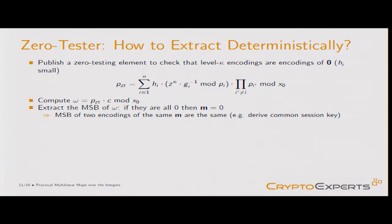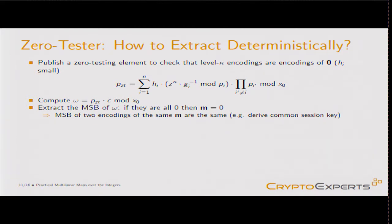How do we extract deterministic information? We publish a zero-testing element which contains z^kappa, so that you can cancel the z^kappa in level-kappa encodings. You have a level-kappa encoding, you want to derive deterministic information, so you multiply by this element mod x0 and extract the most significant bits, which are deterministic in the m_i values.